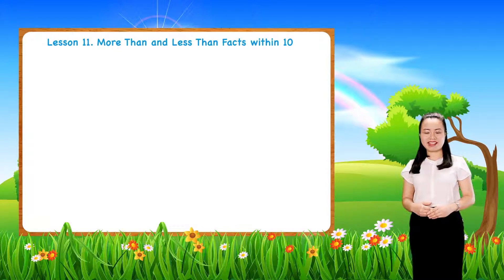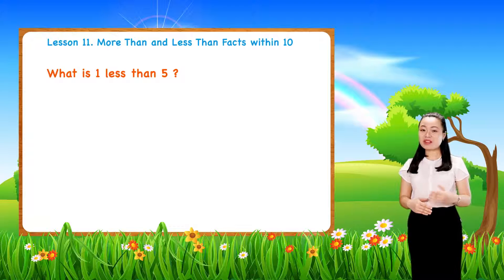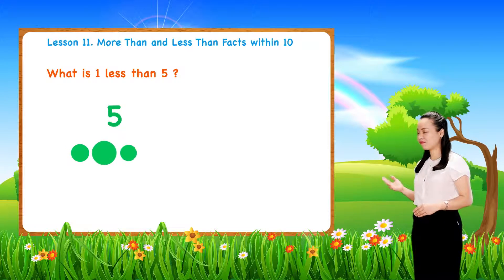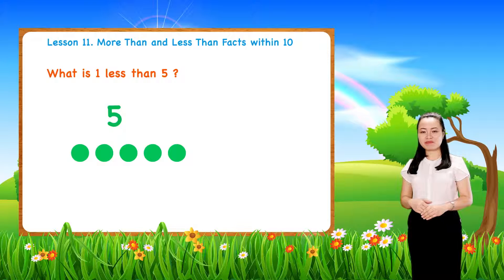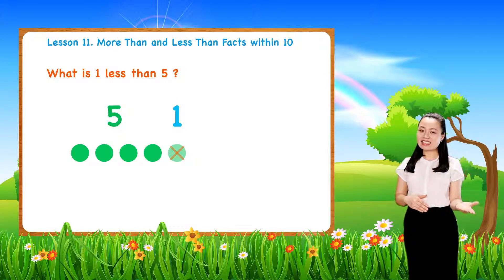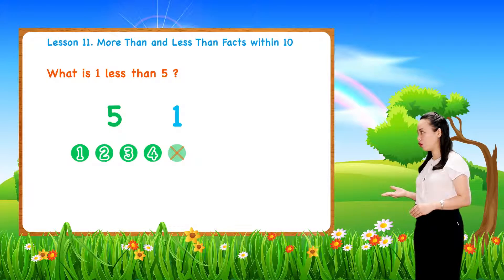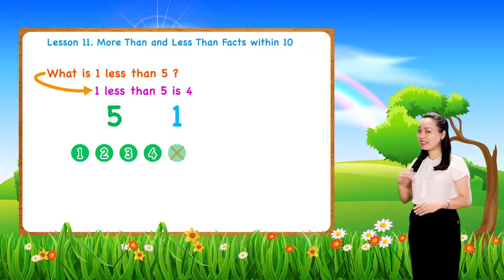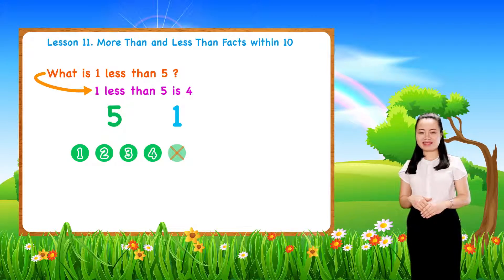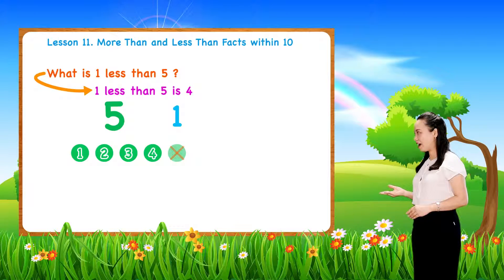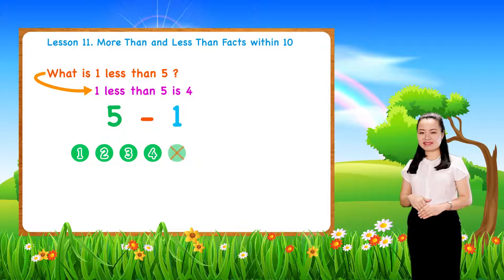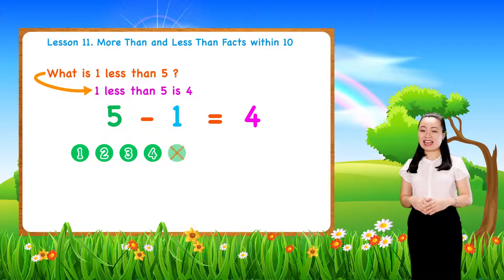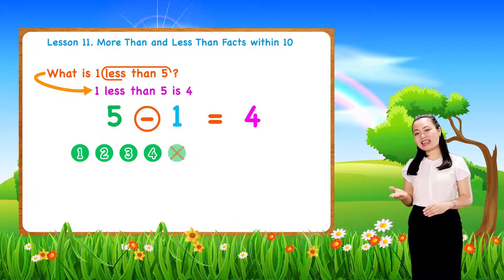Now, what is one less than five? Here, we have five dots. Then, one less. So, we have four dots. Therefore, one less than five is four. Notice, five minus one equals four.